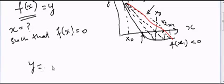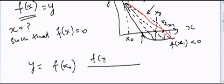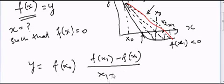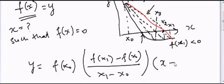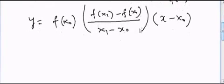The equation for this first line can be written as y is equal to f of x0 plus [f of x1 minus f of x0] divided by [x1 minus x0], so this is the slope, times [x minus x0].